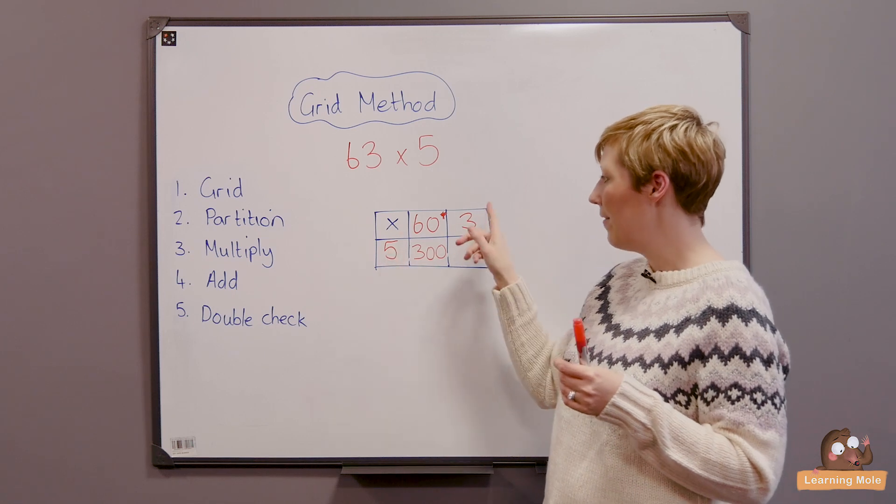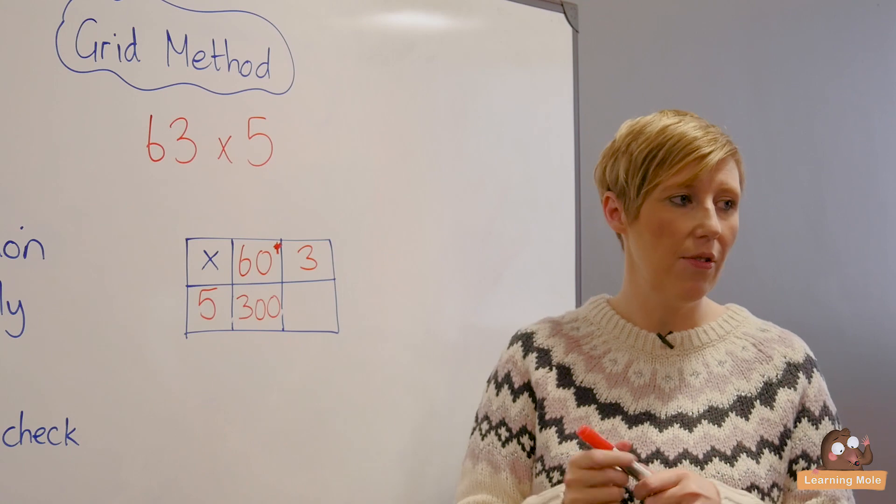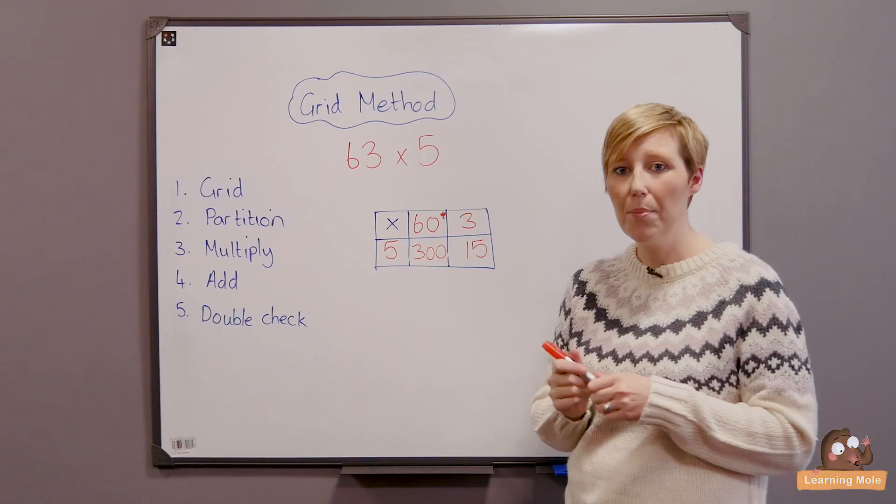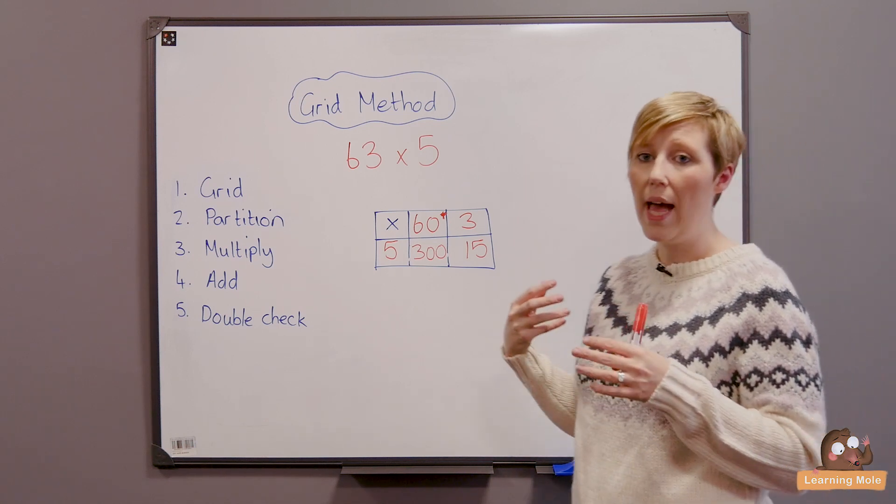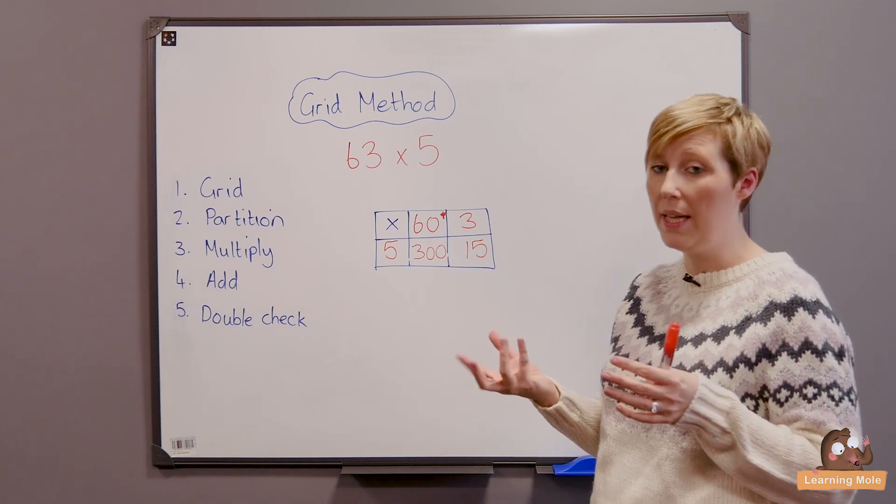And then they're multiplying their 5 times their 3. So their 5 times their 60, their 5 times their 3 which is 15. So now they've got all their answers and this is the point where you might want to colour code it. You might want to show that these are the answers and that's perfectly fine especially in these beginning stages.